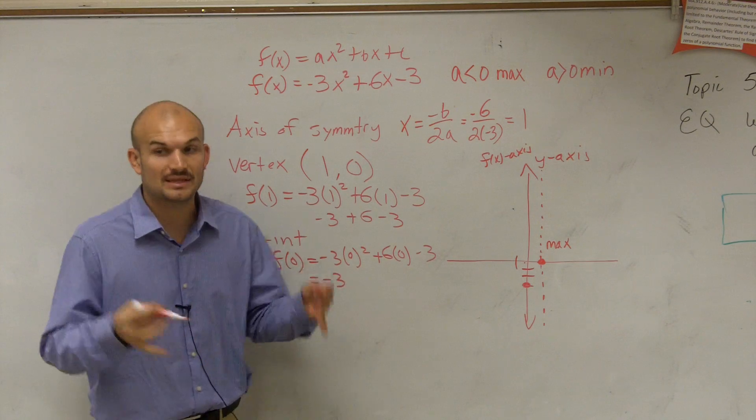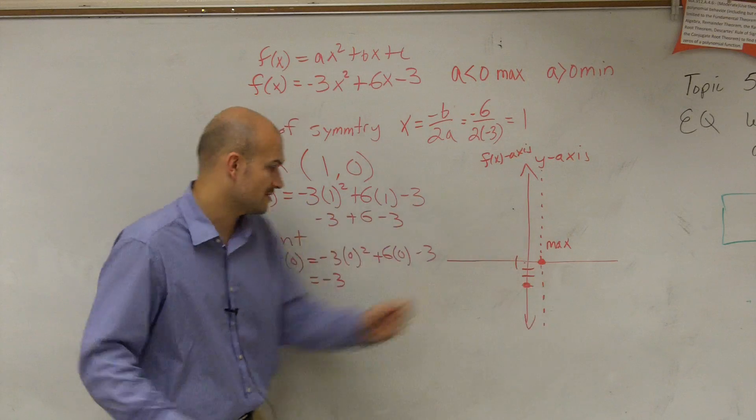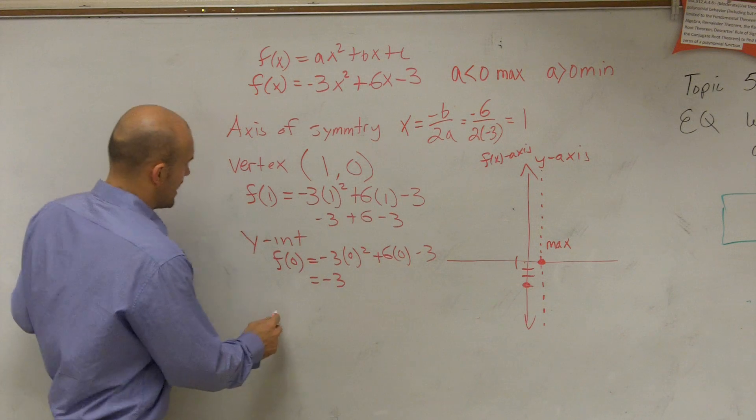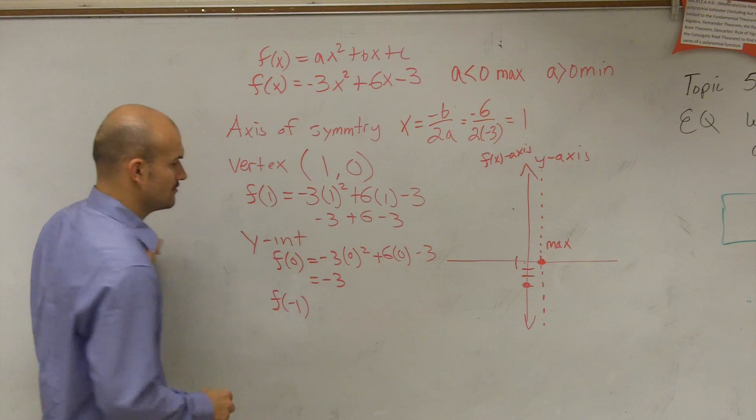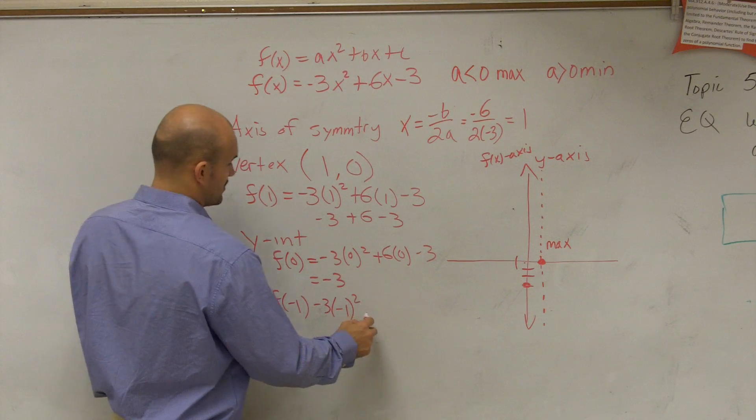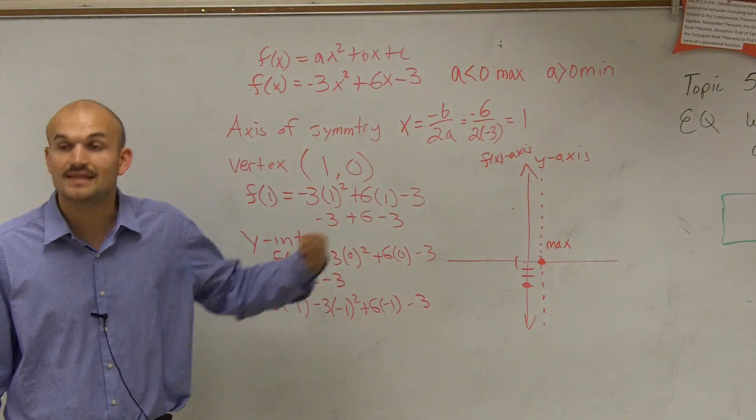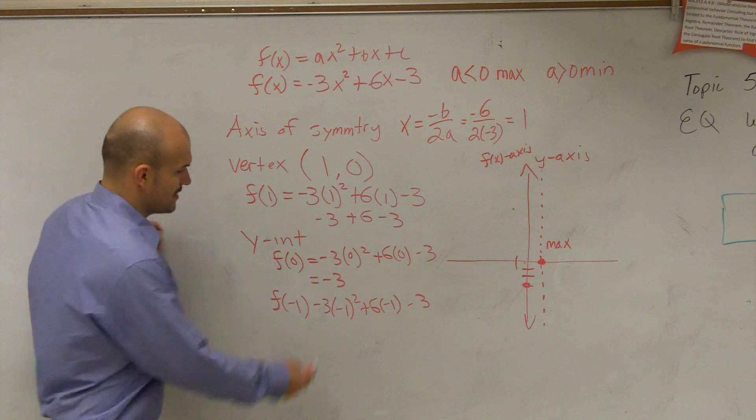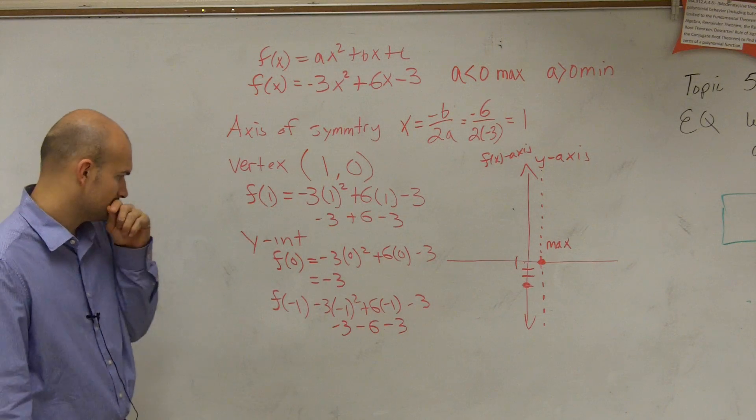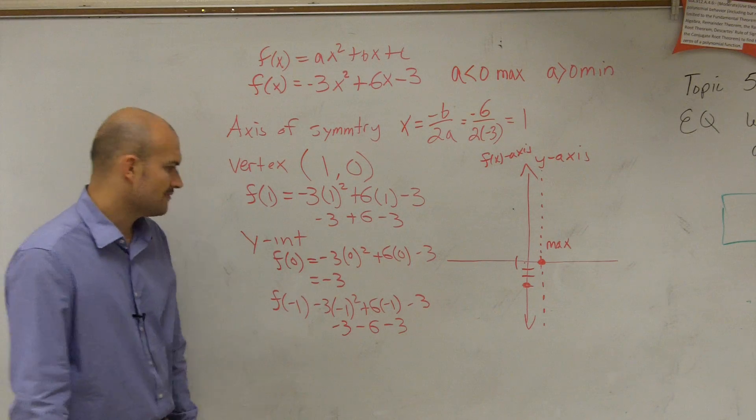Let's figure out at least two points. I always like to do at least two points to the left and two points to the right of your axis of symmetry. So right now, I have a table. I have 0 is at negative 3. Let's figure out what f of negative 1 is. So if I do f of negative 1, I get negative 3, negative 1 squared, plus 6 times negative 1, minus 3. Because you want to pick at least two values, at least two values to the left and right of your axis of symmetry. So therefore, this becomes negative 3, minus 6, minus 3. So therefore, you have negative 12.